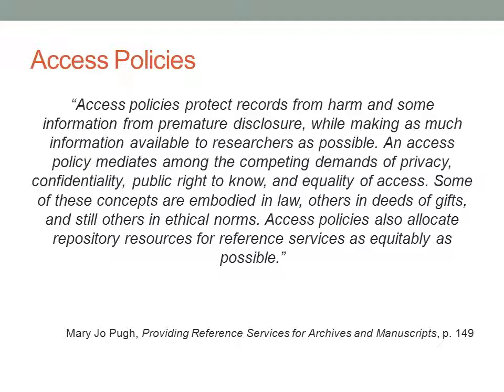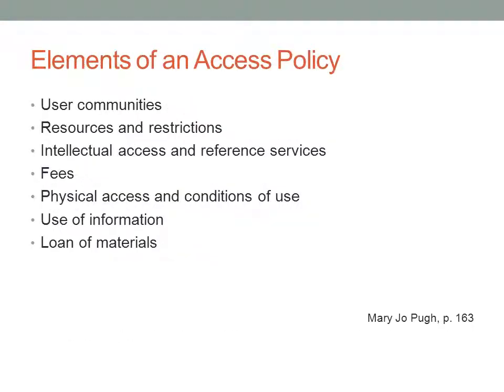It's important to consider your institutional context. There are professional standards and ideas that exist, but you also need to take into account your specific situation at your own repository. There are several different components of an access policy that need to be considered. The first is user communities — thinking about and identifying communities of users who will be served by your repository. Archivists in general are prone to thinking their primary user group is historians, but there really aren't that many of them. It ends up being different groups like genealogists, local historians, or students.